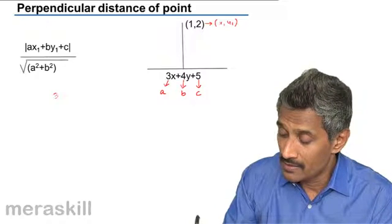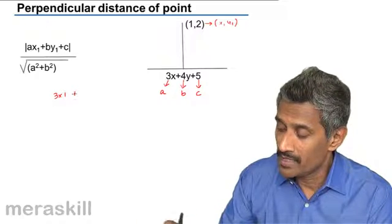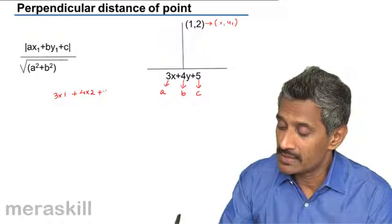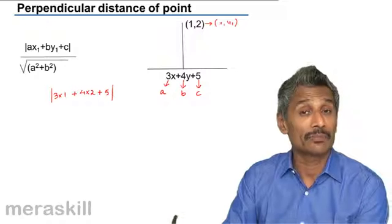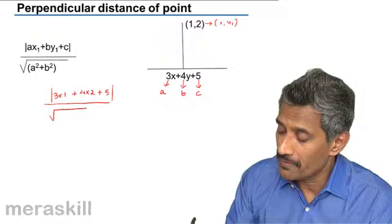So that's 3 into 1 plus 4 into 2 plus 5. Take the modulus of this, because sometimes this could be negative and distance is never negative, divided by the square root of a squared—that is 3 squared—plus b squared, that's 4 squared.